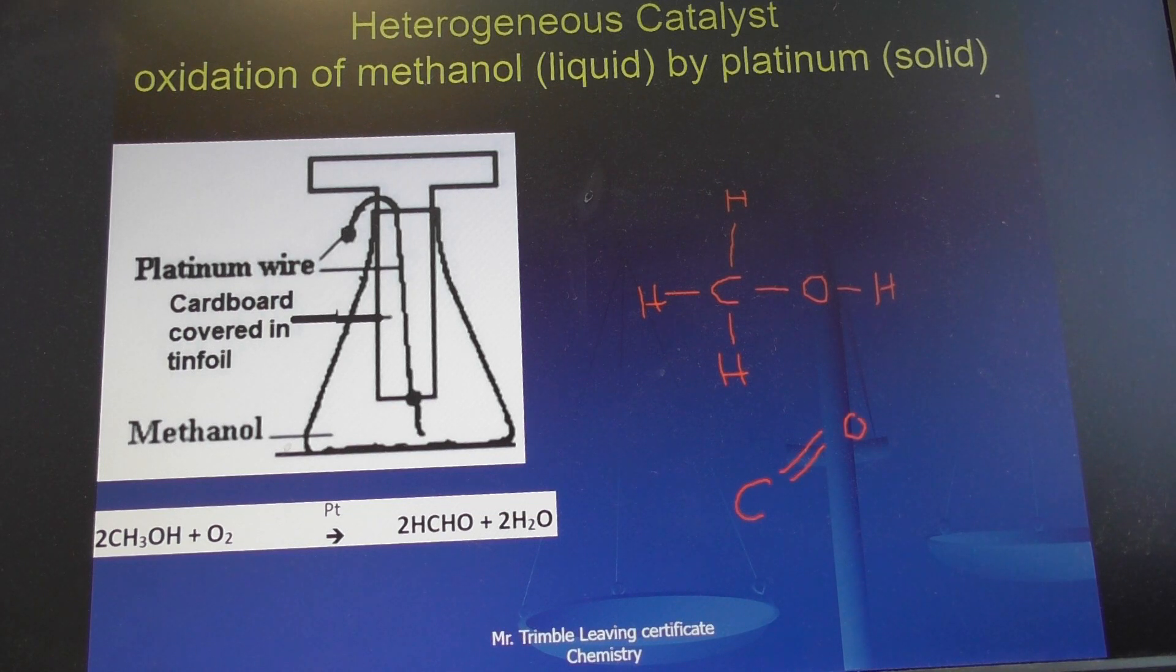If I was to draw it here for you, you would have a carbon with a double bond to one oxygen and a single bond to a hydrogen. If you count up the number of bonds, that carbon has another hydrogen off there, so that's where the formula HCHO comes from. Anything that ends in -al is an aldehyde.